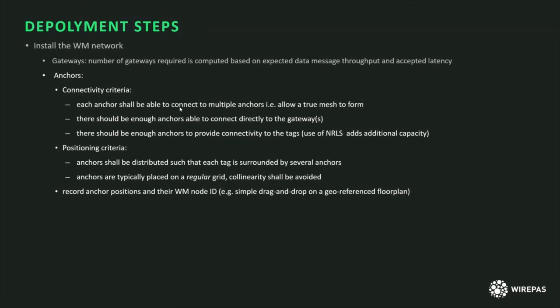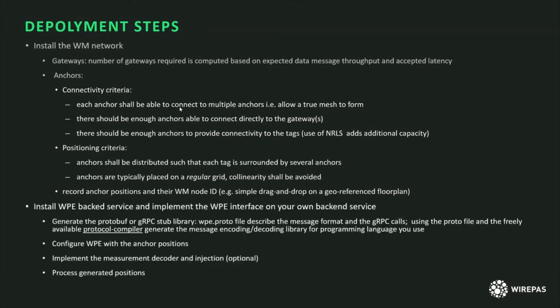The second criterion is positioning: the best results are obtained when anchors are distributed so that tags are surrounded — anchors to the left, right, front, and back. This is typically achieved by placing anchors on a regular grid. You should avoid placing anchors collinearly, such as in a long line, as that provides poor positioning performance even though tags can still connect to the mesh. Finally, you have to record the anchor positions and configure the WPE with them. A simple georeferenced map and a drag-and-drop process will ensure enough precision for this step.